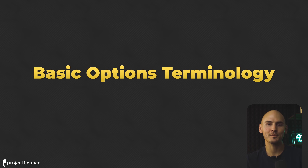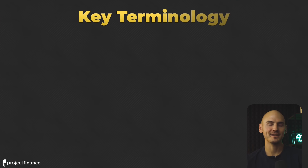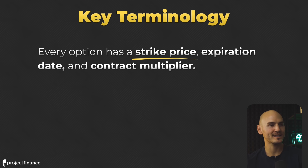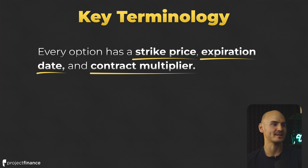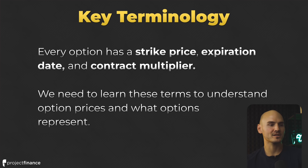We've gotten a little bit ahead of ourselves. I just wanted to show you simple examples of how call options and put options move relative to the stock price and the opportunities they present to options traders. But now we have to go through all the specific details so we can deeply understand options, starting with key terminology. Every option has a strike price, expiration date, and a contract multiplier. We need to learn these terms to understand option prices and what they ultimately represent.